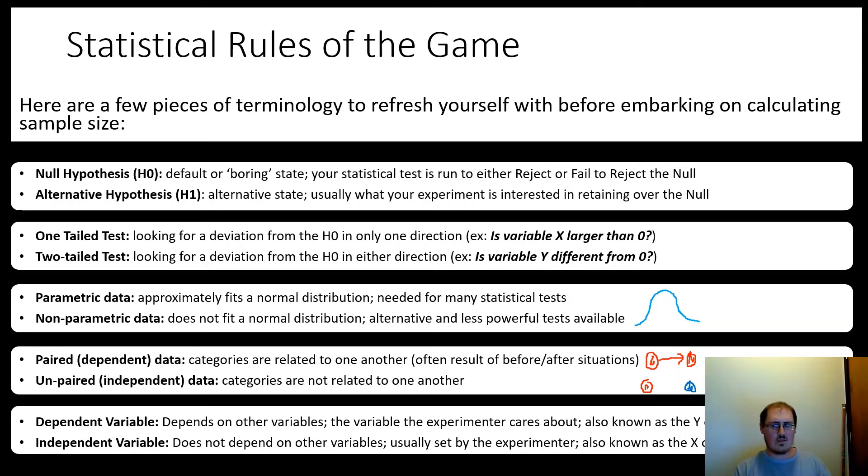And then finally, we have dependent versus independent variable. This is a little bit more about designing your model, designing your test. So a dependent variable depends on other variables, unsurprisingly. And it's usually the variable the experimenter cares about.